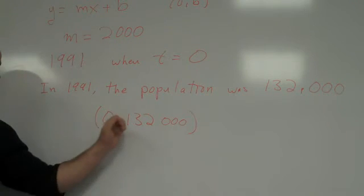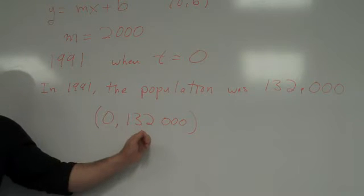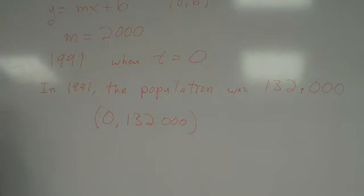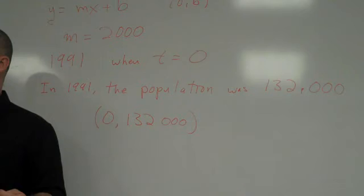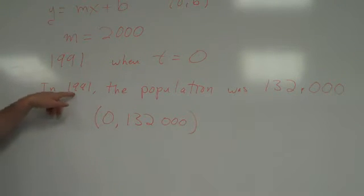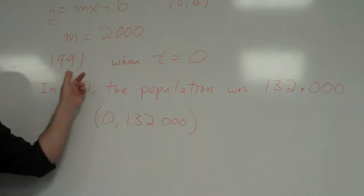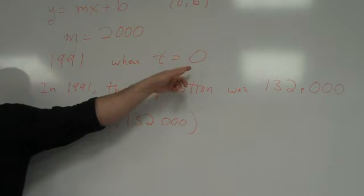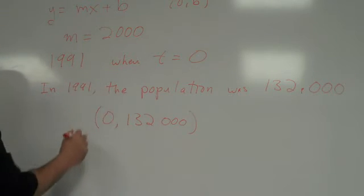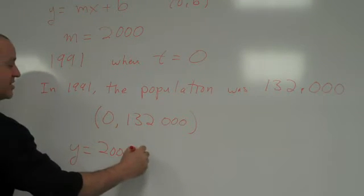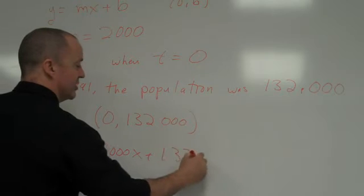If they didn't give us zero comma, if they had said in some other year this was the population, then we would have had to have done some algebra to figure out what B was, or we'd have had to have done that trick where we counted backwards yesterday. In 1991, the population was 132,000. In 1991, we're saying is year zero. So, that's our starting point. So now we can go ahead and say our equation is Y equals 2,000X plus 132,000.